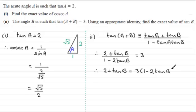And, all I need to do now is expand the bracket on the right-hand side. So, we'll just copy the left-hand side, 2 plus tan B. And, expanding the right-hand side gives us 3 minus 6 tan B.